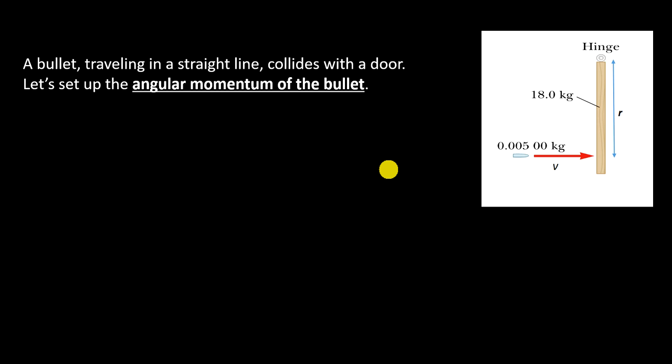So, we're looking at a bullet traveling in a straight line. It collides with the door, and let's set up the angular momentum for this bullet. This is part B. Showing how we convert from linear momentum into angular momentum.